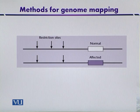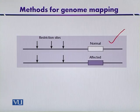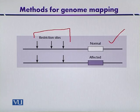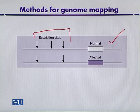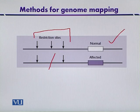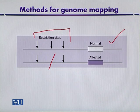For example, consider two gene segments of DNA. The first, the normal one, has three restriction sites. If the genotype is affected due to mutations, base substitutions, additions, or deletions, one site may be lost. In that case, the number of fragments produced will be different, and we can exploit such variations to study the locations of different genes.